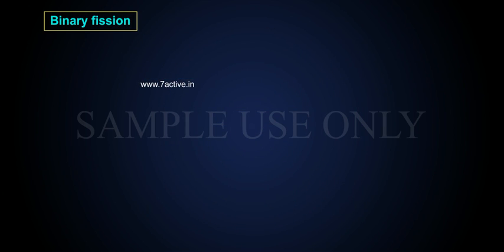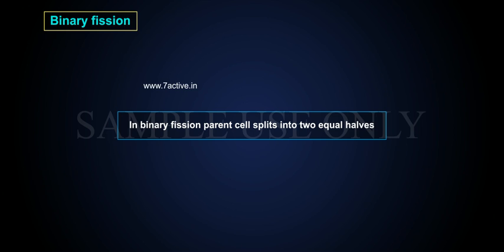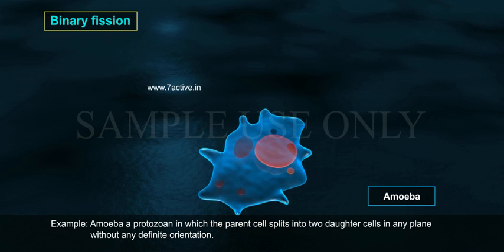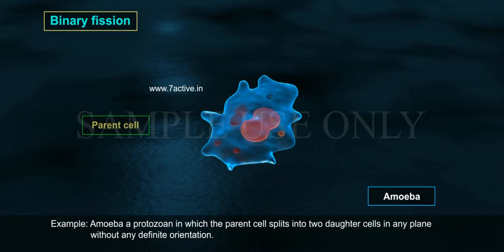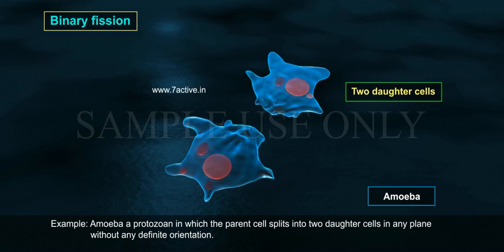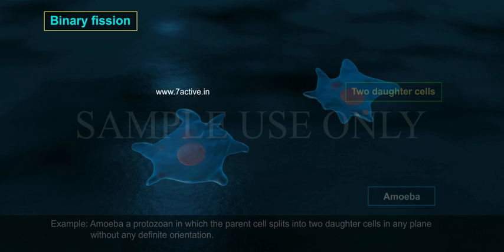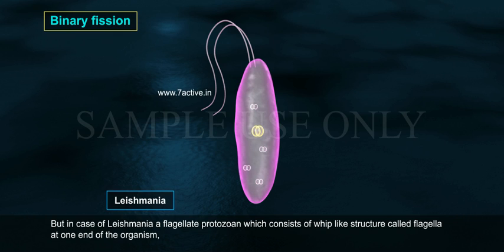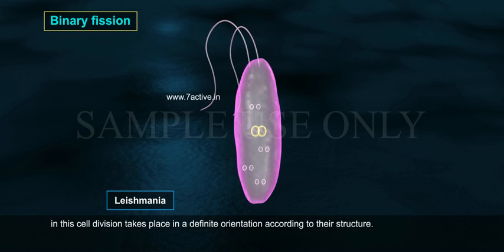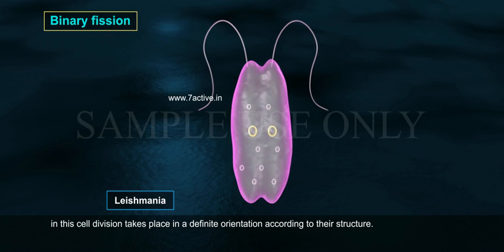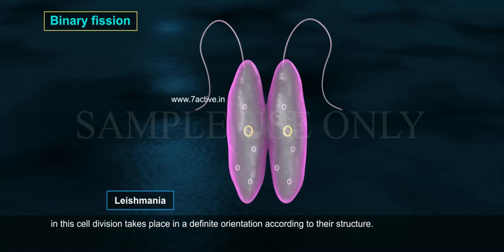Binary Fission. In binary fission, the parent cell splits into two equal halves. For example, amoeba, a protozoan in which the parent cell splits into two daughter cells in any plane without any definite orientation. But in the case of leishmania, a flagellate protozoan which consists of a whip-like structure called flagella at one end, cell division takes place in a definite orientation according to their structure.